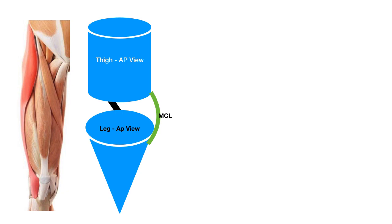This pictorial representation of the anteroposterior view shows the thigh in the upper part and leg in the lower part. The black structure is the anterior cruciate ligament and the green structure is the medial collateral ligament. The red curved line indicates the iliotibial tract, which gets attached to the upper and outer aspect of the lateral tibial condyle.